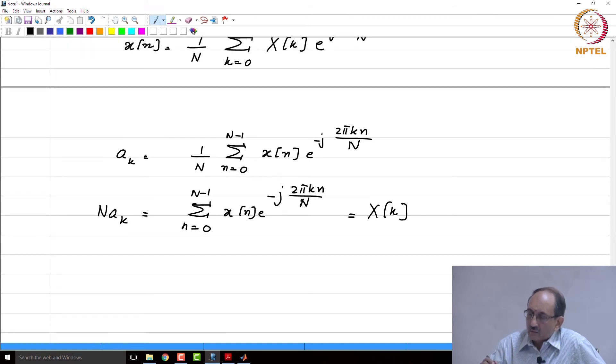In fact, the famous Cooley-Tukey paper 1965, which talks about the fast Fourier transform or FFT, which we are going to discuss after we are done with the DFT and its properties. That paper's title was An Algorithm for Machine Computation, it did not say FFT or DFT, An Algorithm for Machine Computation of Complex Fourier Series was the title of that very famous paper. That also brings up this point.